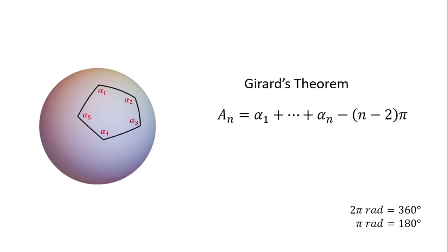There's a simple theorem for the area of polygons in a unit sphere. It's called Girard's theorem. It says that the area of n-side polygon on a sphere, with angles alpha 1 to alpha n, is given in radians by the angular excess. And remember that 2 pi radians is equal to 360 degrees.